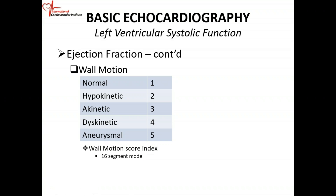There is a concept where we talk about wall motion score index. When you do your wall motion score index, you get 16 segments and you score those 16 segments. Your score can be 1 if it's normal, 2 if it's hypokinetic, 3 if it's akinetic, and 4 if it's dyskinetic.